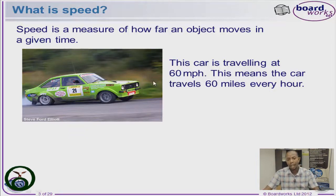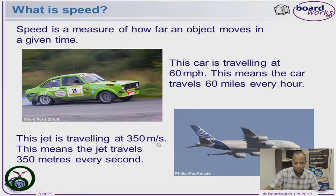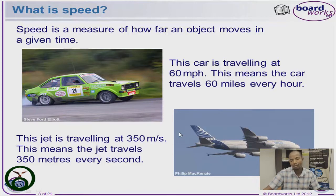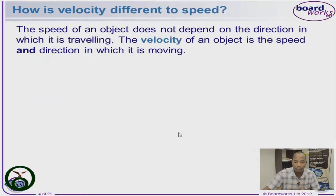Let's take a look at a jet that is flying and has moved a distance of 350 meters in one second. Therefore the speed will be 350 meters per second. What about a car that moves a distance of 120 kilometers in one hour — for example, moving from here to KLIA — therefore the speed of the car is 120 kilometers per hour.